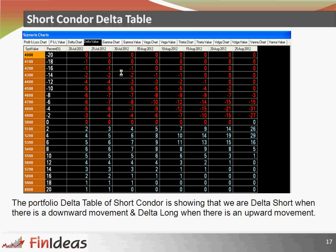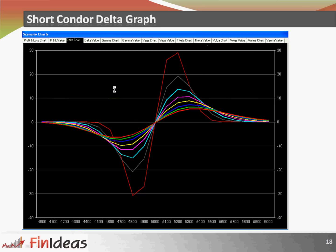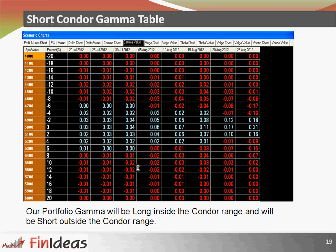Delta table for short condor: the portfolio delta of short condor shows that we are short delta when market has a downward movement and long delta when there is an upward movement. In the table we are having positive delta on the upside and negative delta on the downside. The short condor delta graph confirms that we are having long delta on upward movement and short delta on downward movement.